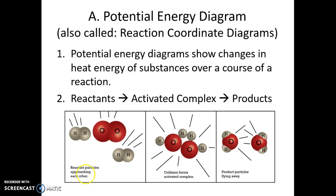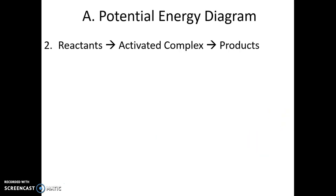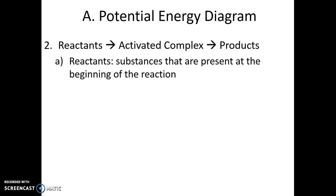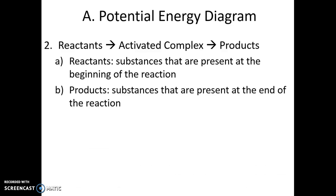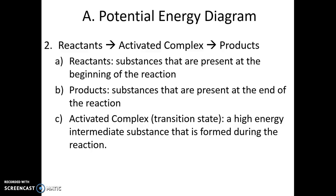Here is a picture of what that would look like. We have the reactants — what you put into the reaction — then you have the activated complex, where all the molecules are smashed together, bonds are being broken and bonds are being formed. It's a very highly unstable state that doesn't last very long, and then it turns into products, which are what's left over after the reaction. The activated complex is also called the transition state — a very high energy, very unstable intermediate state formed during the chemical reaction.